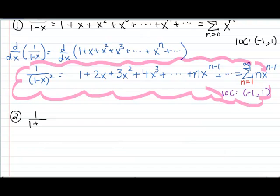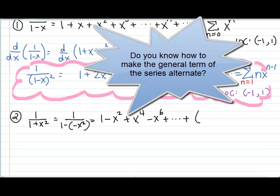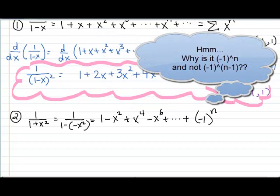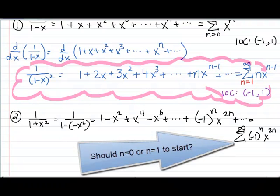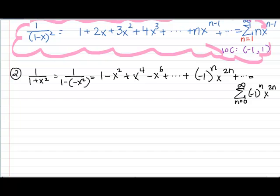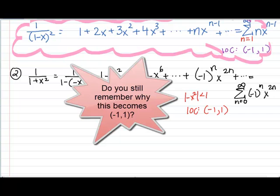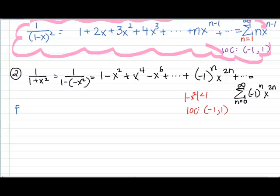Now let's take a look at a different series, 1 over 1 plus x squared. This is 1 over 1 minus a negative x squared. I want to think of this as a over 1 minus r, so my first term is 1, and I'm multiplying by a negative x squared every time. Notice it's an alternating series. My general term is negative 1 to the n, and then x to the 2n. I'm going to start at n equals 0. This particular one also had an IOC of negative 1 to 1.